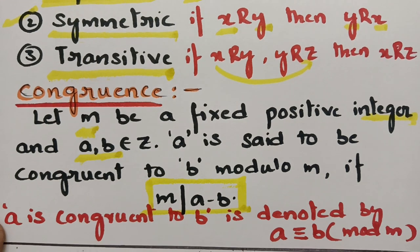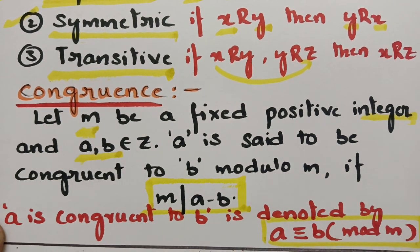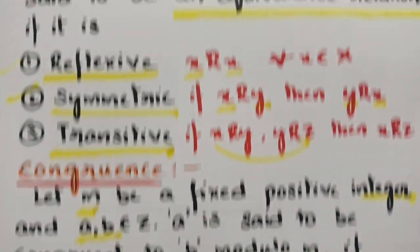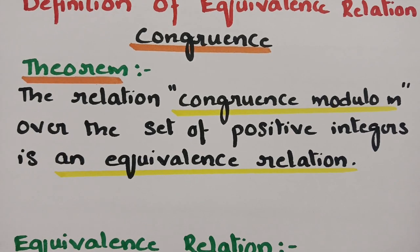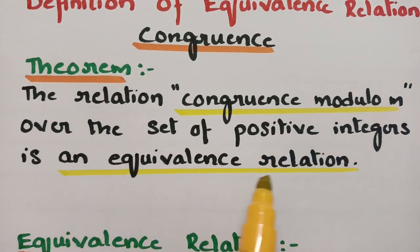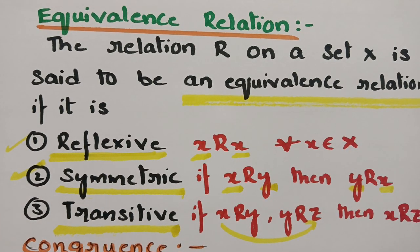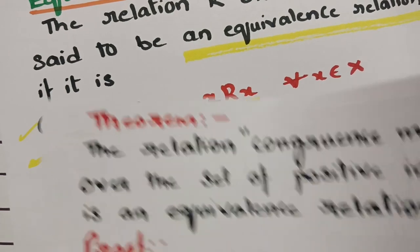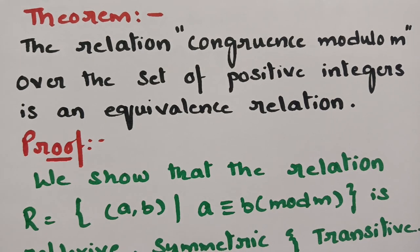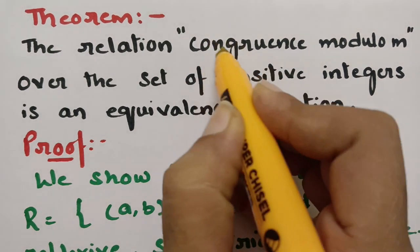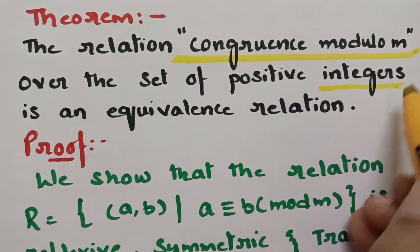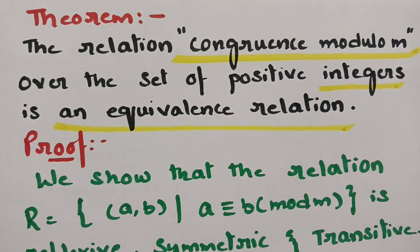This is the symbol you need to learn. This congruence relation — congruence modulo m over a set of positive integers — is an equivalence relation. The theorem states: the relation congruence modulo m over a set of positive integers is an equivalence relation.